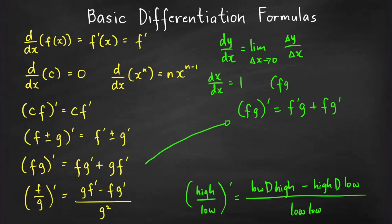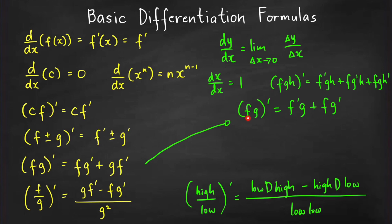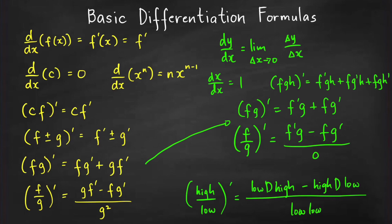If you remember the product rule as 'derivative of the first times the second, plus the first times the derivative of the second,' then the quotient rule is easy: derivative of f over g equals f prime·g minus f·g prime, all over g squared — just change the plus sign to a minus sign and divide by the square of the denominator.